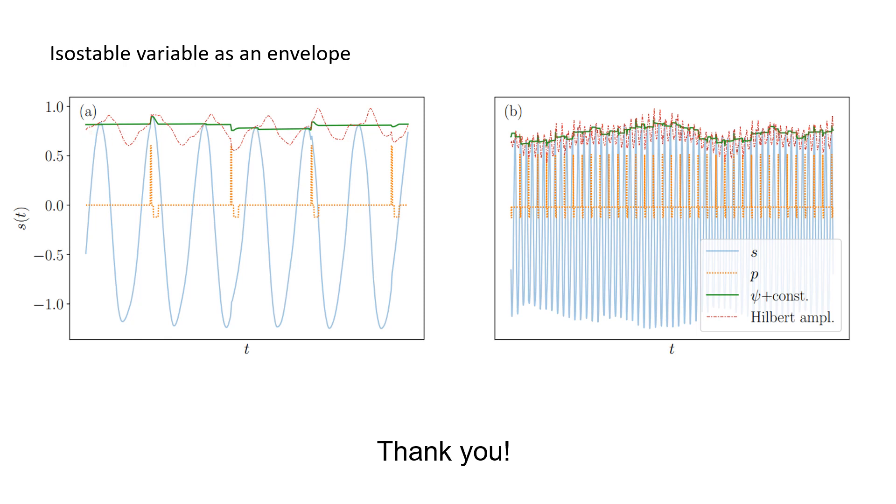For example, the isostable variable, when properly offset, serves as a great signal envelope. You can see here a comparison of the Hilbert envelope, which varies even when the system is perfectly periodic.